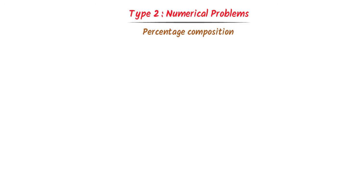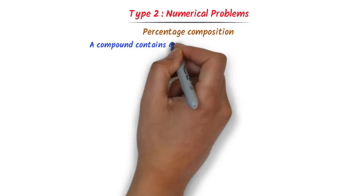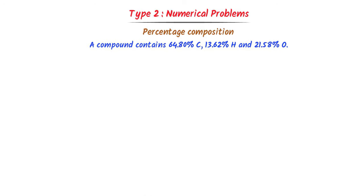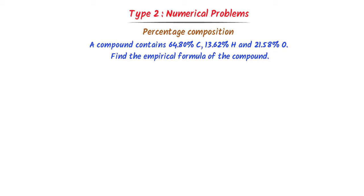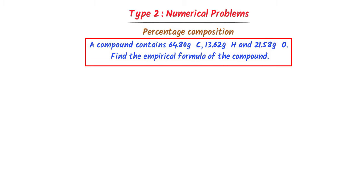Now let me teach you Type 2 numerical problems, which we call percentage composition. Consider this problem: a compound contains 64.8% carbon, 13.62% hydrogen, and 21.58% oxygen by weight. Find the empirical formula. In this type, percentages of different atoms are given, but we treat them as masses in grams — 64.8 grams of carbon, 13.62 grams of hydrogen, and 21.58 grams of oxygen.